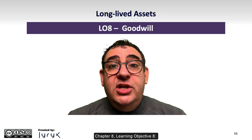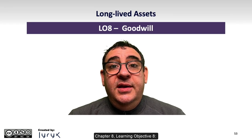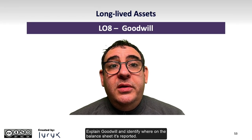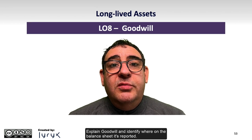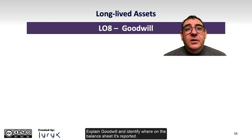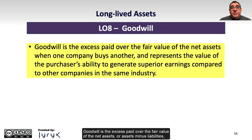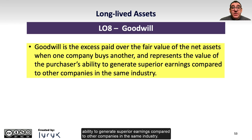Chapter 8, Learning Objective 8: Explain goodwill and identify where on the balance sheet it's reported. Goodwill is the excess paid over the fair value of the net assets — or assets minus liabilities — when one company buys another, and represents the value of the purchaser's ability to generate superior earnings compared to other companies in the same industry.